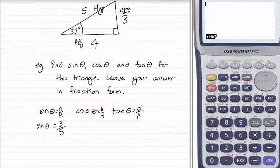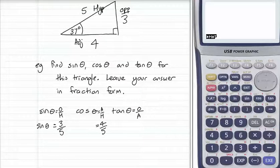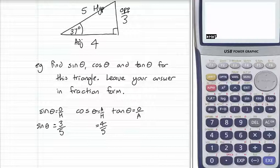For cos theta, we want the adjacent over the hypotenuse. The adjacent is 4, the hypotenuse is 5, so cos of the angle is 4 over 5. That's it, it's very simple.